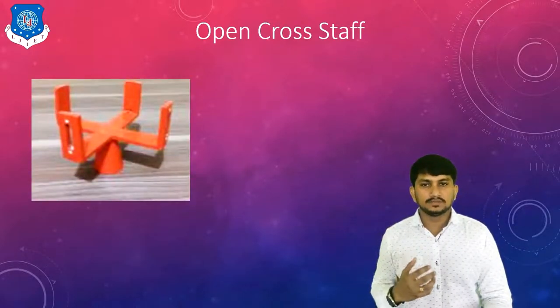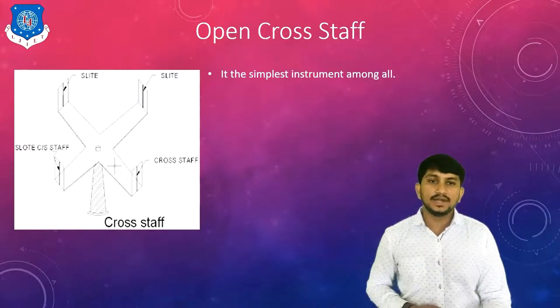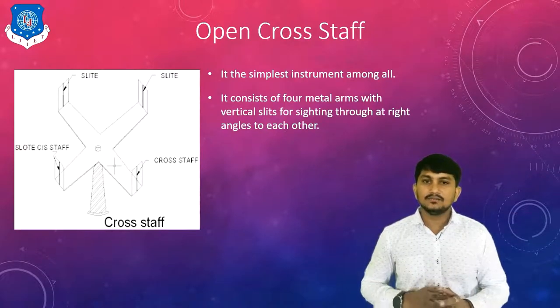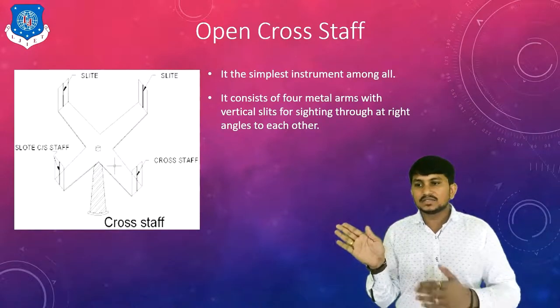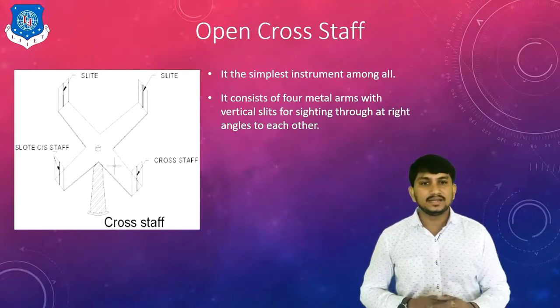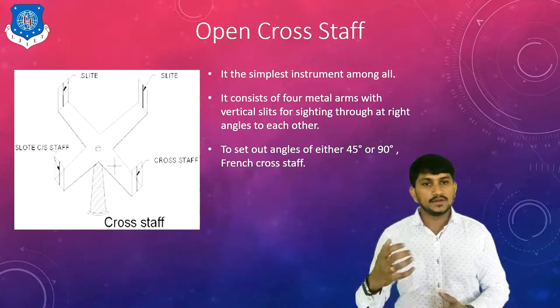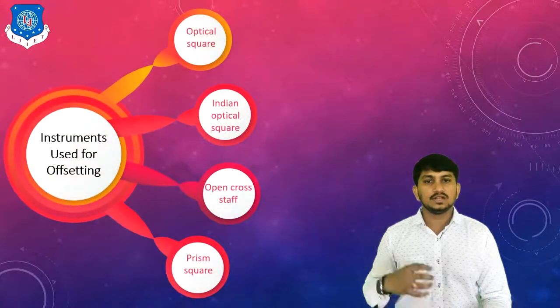Now let's move to the third instrument, the open cross-staff. This is the simplest instrument among all four. It consists of four metal arms with vertical slits for sighting through at right angles to each other, so these metal arms are at 90-degree angles. It is used to set out angles of either 45 degrees or 90 degrees.